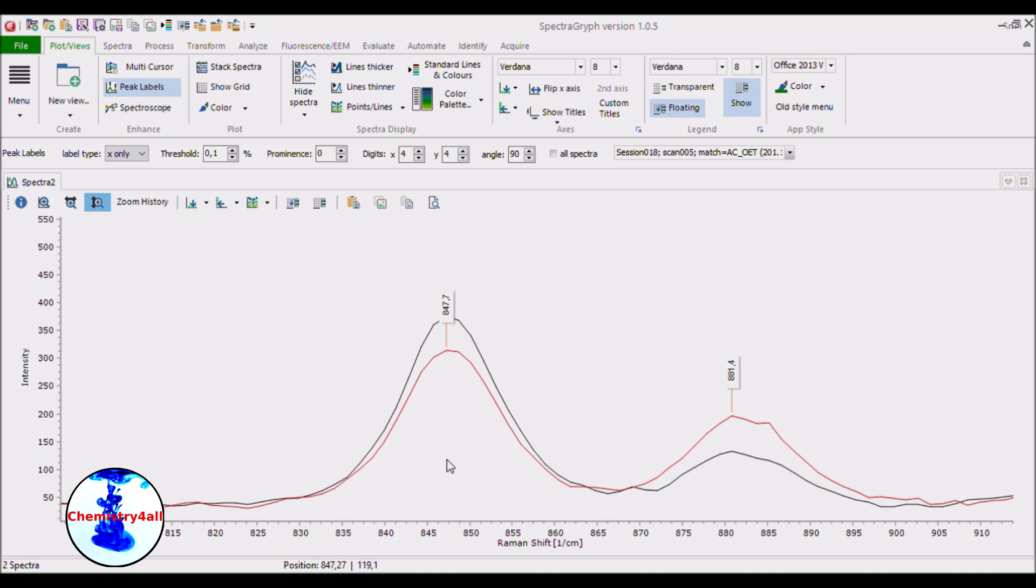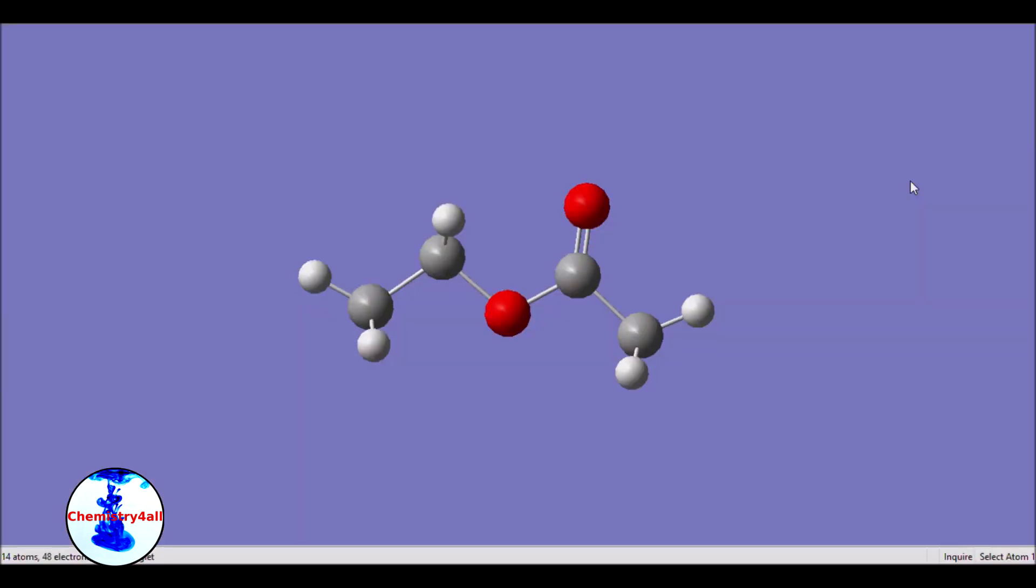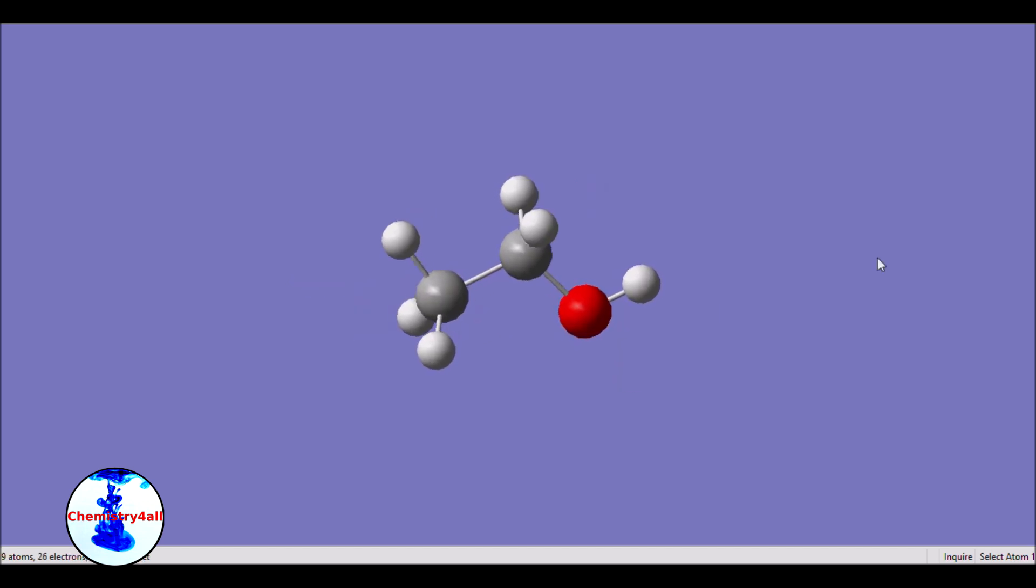These two Raman peaks are actually very significant to discriminate between ethyl acetate and ethanol. Let's have a look to the normal vibration modes of these molecules. As we can see, in the case of ethyl acetate, the Raman peak is probably associated with a carbon-oxygen single bond vibration mode. Whereas, on the other hand, in the case of ethanol, the Raman peak is likely to be associated with a general aliphatic vibration mode.